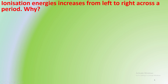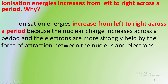Do you know why ionization energy increases from left to right across a period? Ionization energy increases from left to right across the period because nuclear charge increases across the period, and the electrons are more strongly held by the force of attraction between the nucleus and the electron.